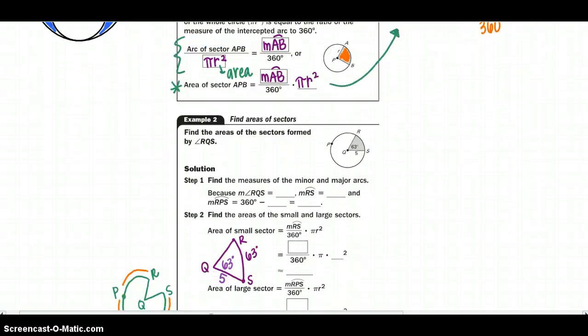Moving down to our first example, we want to find the areas of the sector formed by our angle. So again, there are two sectors. There is our small one, and then there is also our large sector that goes the other way around the circle. So I first need to find out each arc measure. So my angle rqs equals 63 degrees. So my measure of my green arc would be also 63 degrees, because of what we learned in the last chapter. But how do I find my other arc? Well, my whole circle is 360 minus the part that I already have for rs. So that would give me 297 degrees.